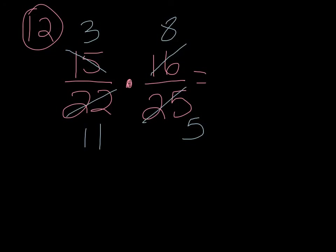Numerator times numerator, 3 times 8 is 24. Denominator times denominator, 11 times 5 is 55. And then I may have to ask myself, hey self, can I simplify this? And myself is looking at these numbers and thinking, okay, 2 is not going to work, 3 is not going to work, 4 is not going to work, 5 is not going to work, and no, this is going to be simplest form.